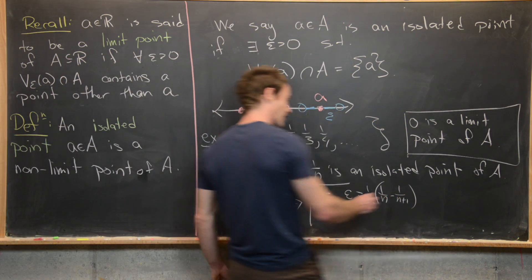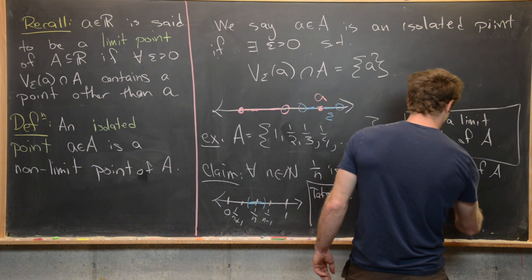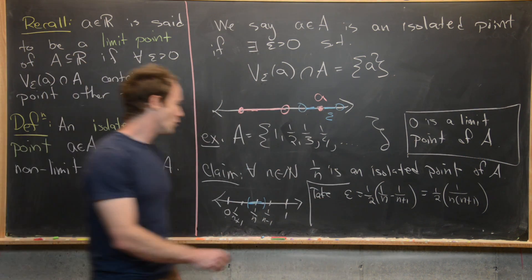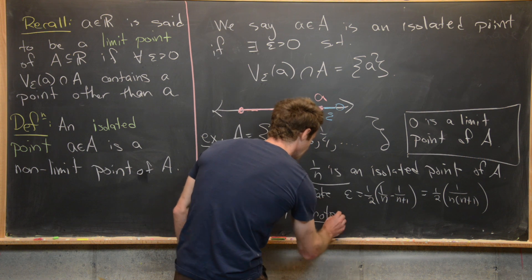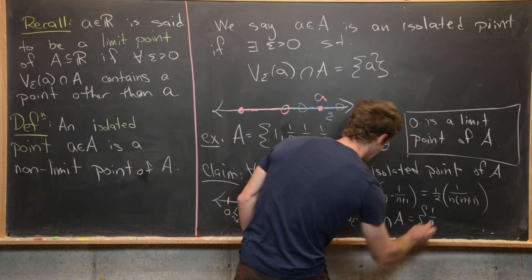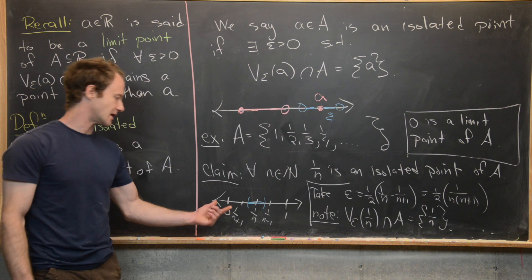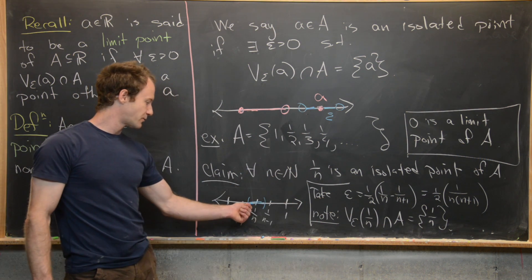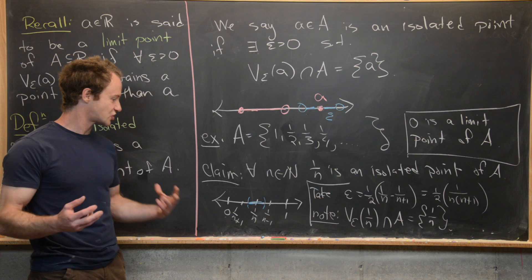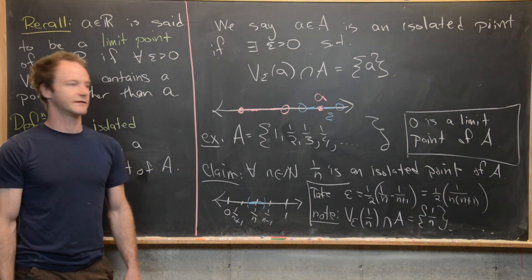That simplifies to one half times one over N(N+1), finding common denominators. If we take epsilon equal to this value, then the epsilon neighborhood of 1/N intersected with A contains only the point 1/N itself. This is because there are no other reciprocals of natural numbers between the left endpoint and the right endpoint of this epsilon neighborhood — by construction, we made epsilon land right between the two adjacent reciprocals of natural numbers.